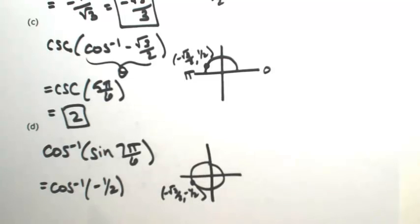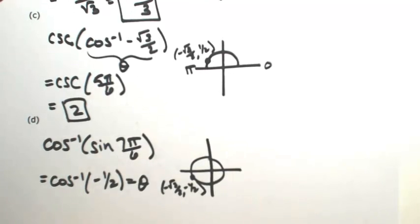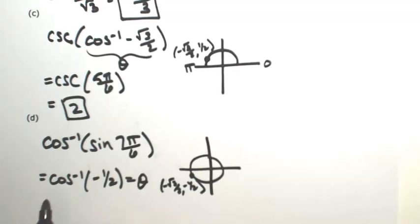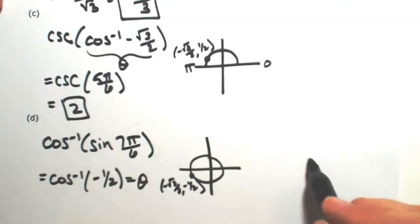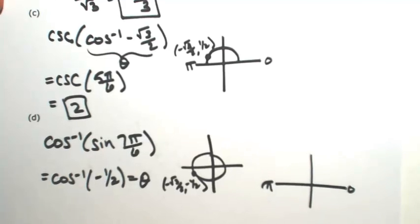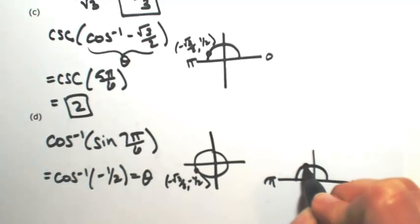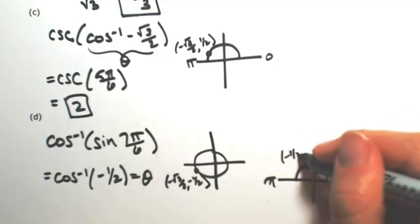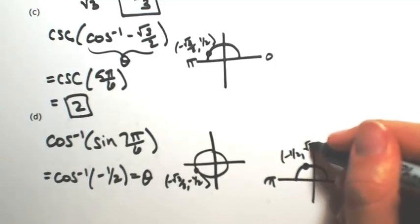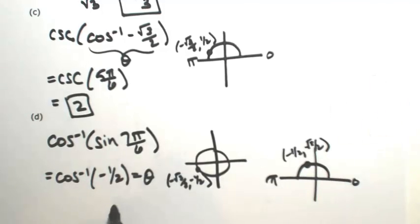Now it's like a new problem. I need to find the inverse cosine, which is an angle whose cosine is negative one-half. Keeping in mind inverse cosine — the angle restriction of cosine between zero and pi, so we can only be looking at the top of the unit circle. Where x is negative one-half, we're at the point (-1/2, √3/2), which is two pi over three.